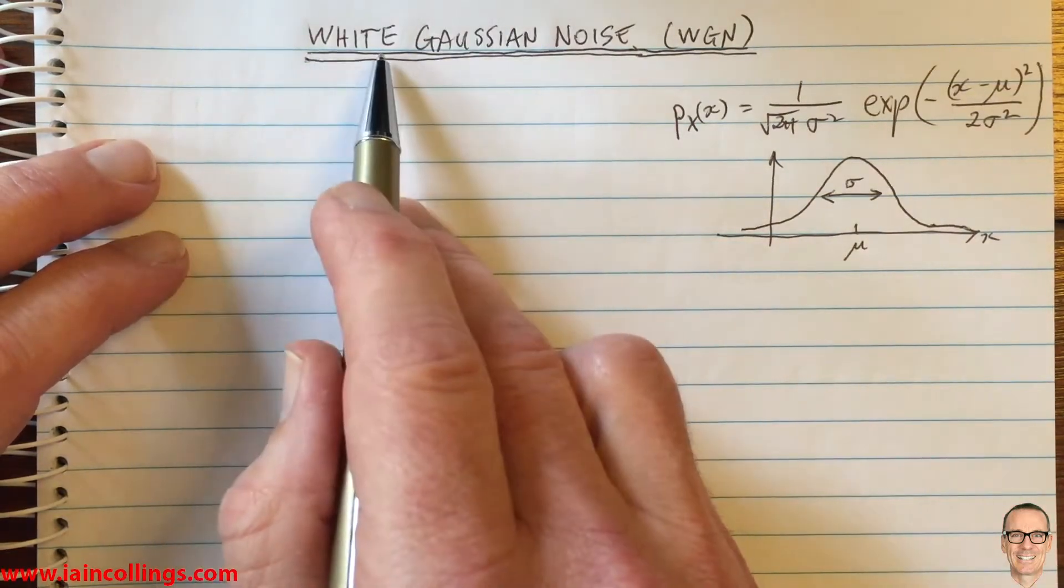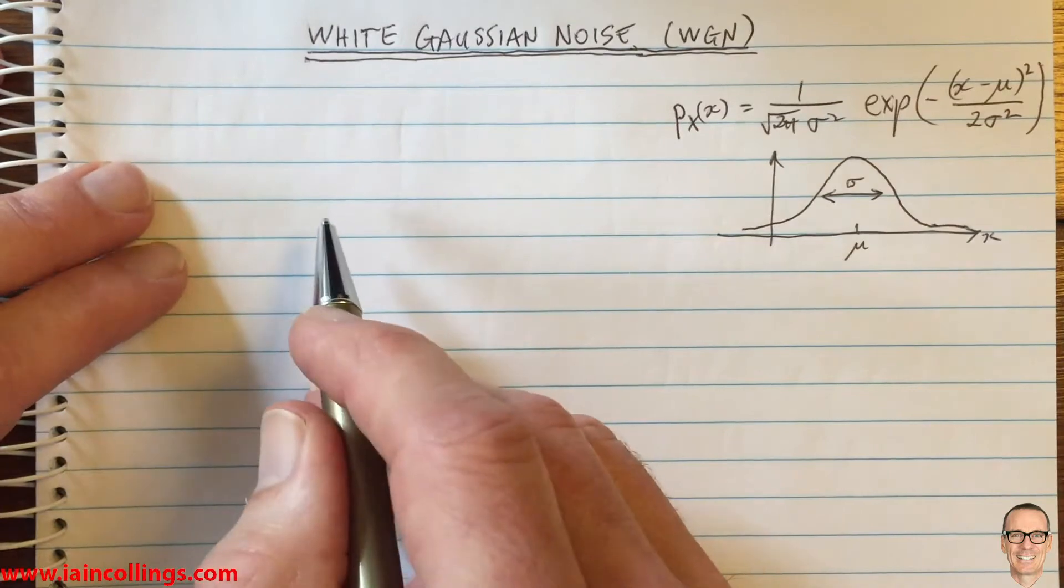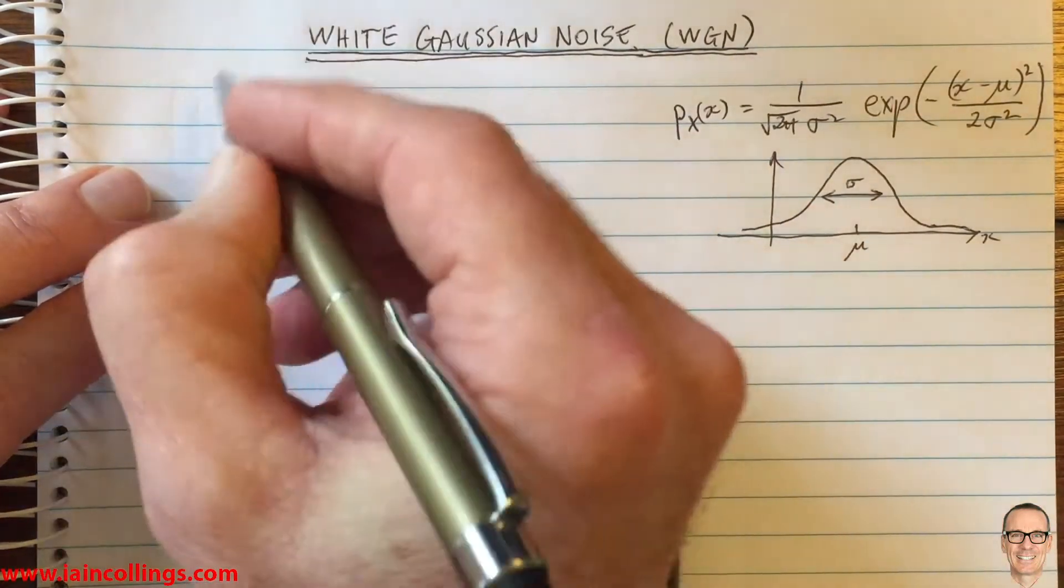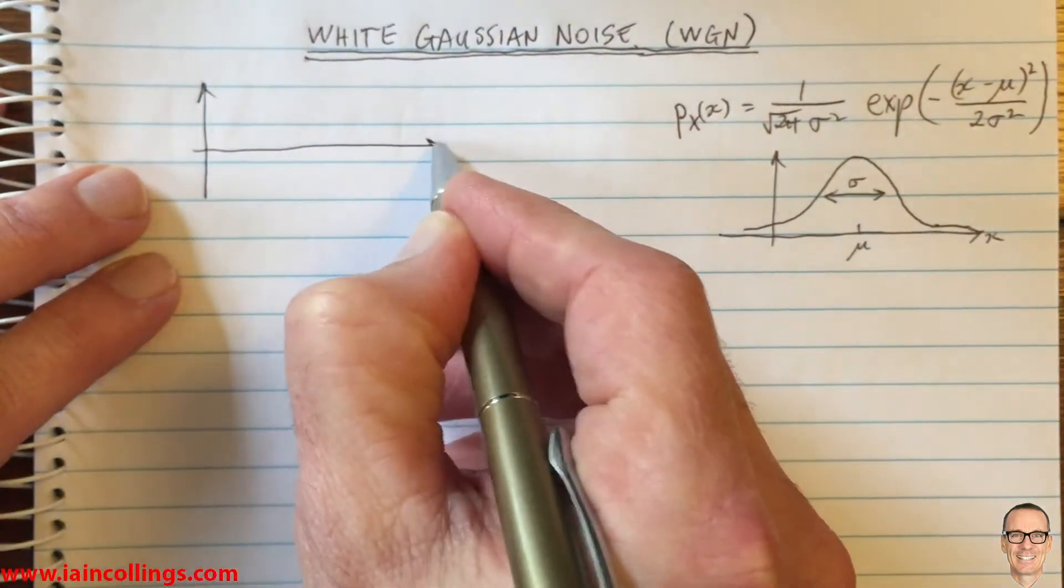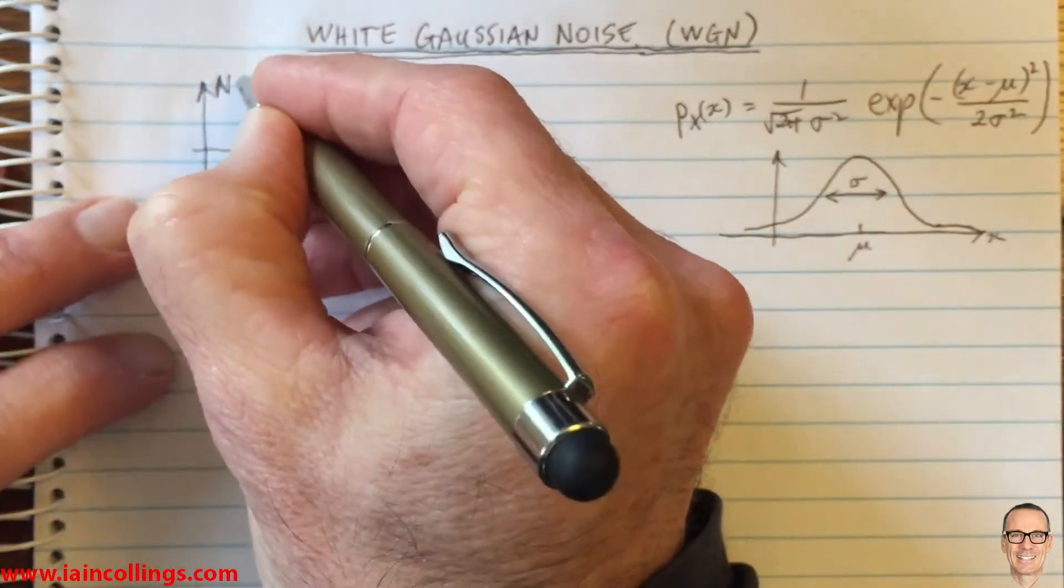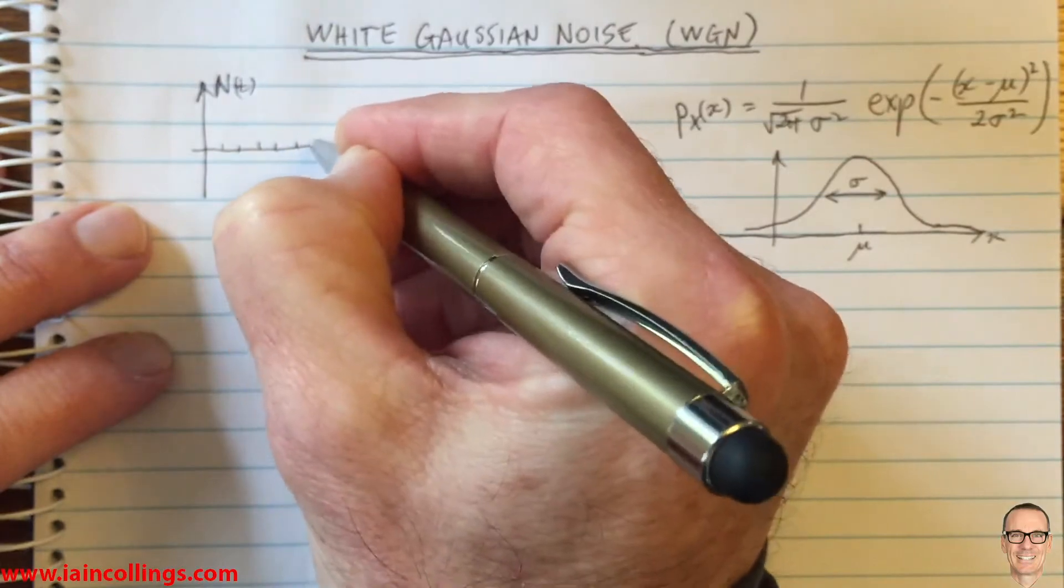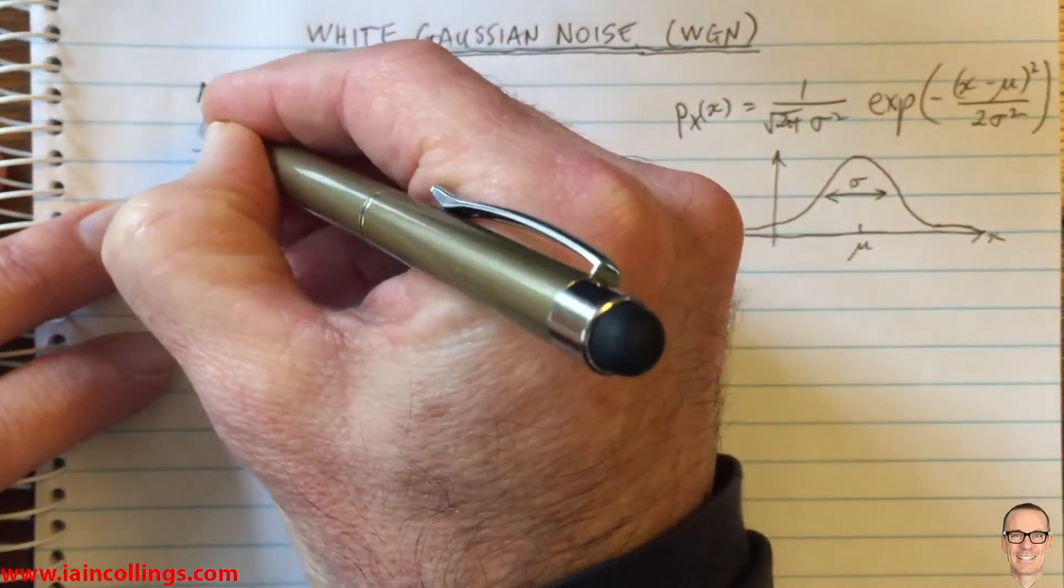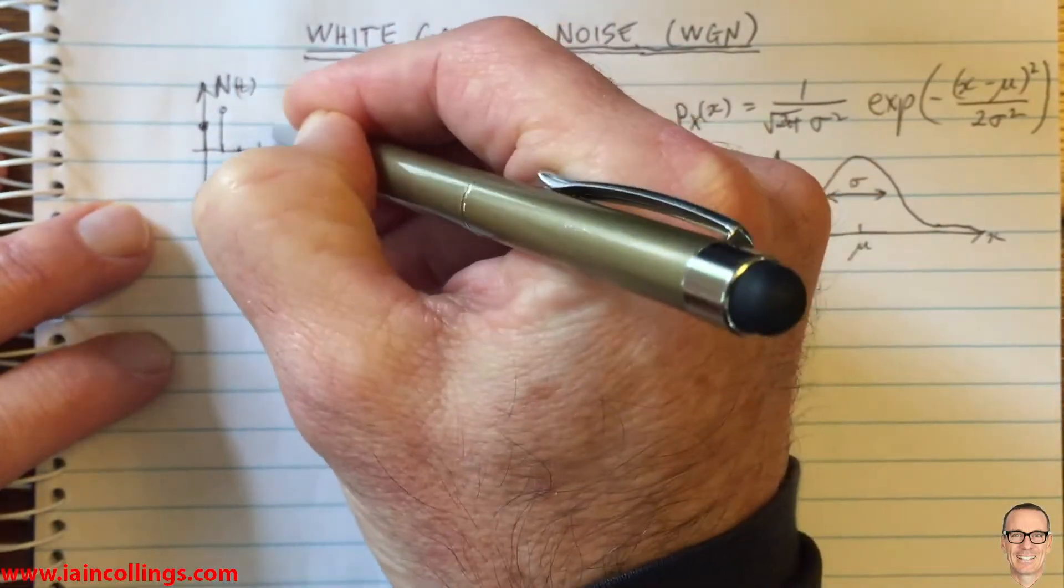The focus today is on white Gaussian noise. So let's think about noise as a process - this was a random variable, and what is a random process? Here's a time function where we've taken time samples of noise at regular intervals. In a digital communication system this would be the symbol rate, and maybe the noise has these sorts of values that I'm drawing here.